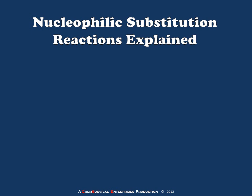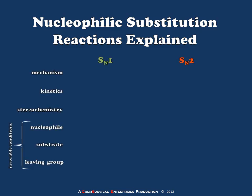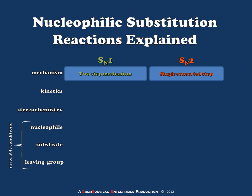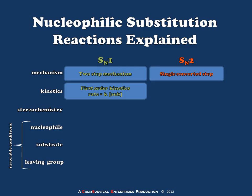Now that we've considered each mechanism individually, let's compare them side by side. Starting with the mechanism: the SN1 reaction occurs in two steps — first the departure of the leaving group, followed by the attack of the nucleophile — whereas the SN2 reaction occurs in a single concerted step in which the nucleophile attacks and the leaving group departs simultaneously. From a kinetics perspective, the SN1 follows first-order kinetics, so its rate law is determined only by the concentration of the substrate and the nucleophile does not enter into the rate equation.